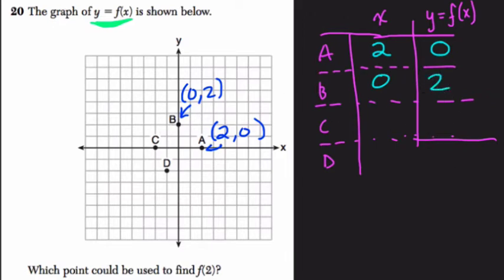Keep going. C is the point negative 2, 0. And so we just label that in our table, negative 2, 0.